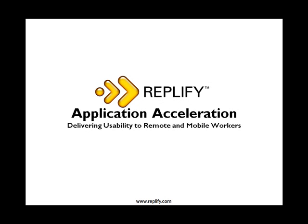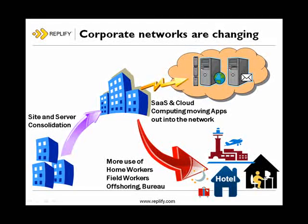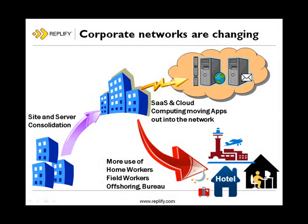Let's start with some context. Corporate data networks are evolving. There are three very distinct trends at the moment. Firstly, server and site consolidation as companies seek efficiencies. Secondly, the rapid growth in software as a service and the migration of corporate applications into the cloud. And thirdly, ever-growing numbers of home workers, mobile workers, and offshoring.